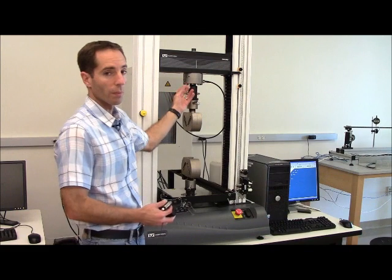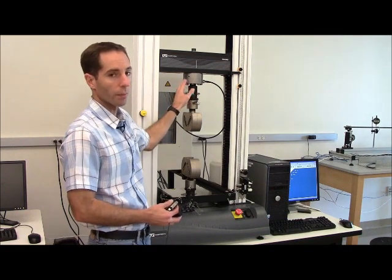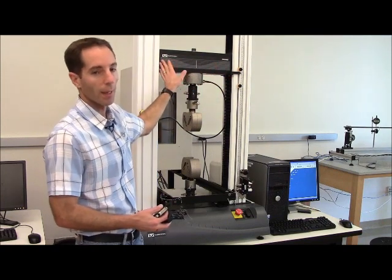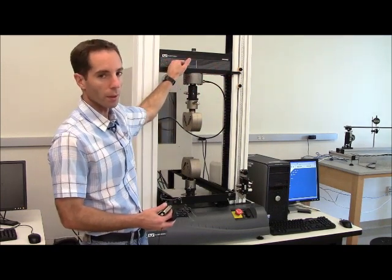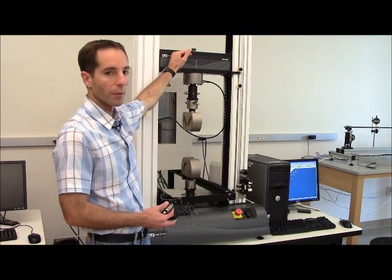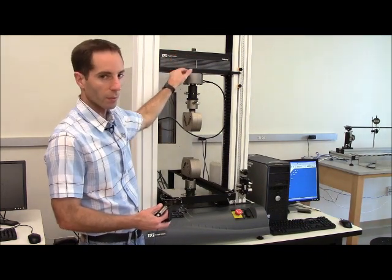By the way, these load cells are capable of both tension and compression, so they can read both values. We have the cross member here that is the part that actually moves, so if we're doing tension, this is moving up to pull the sample apart. In compression, it's moving down.